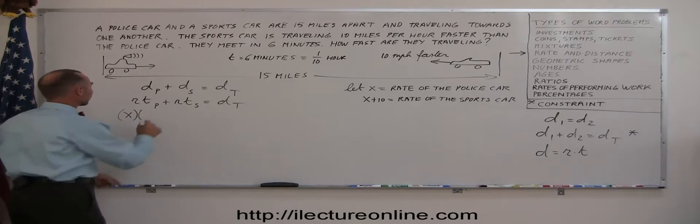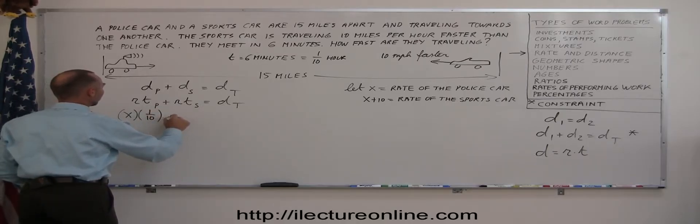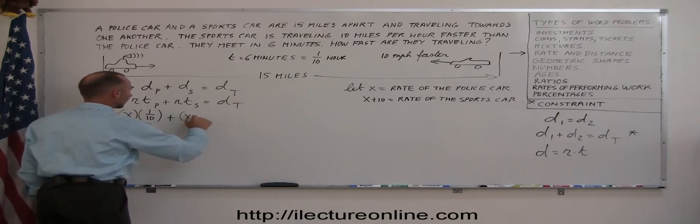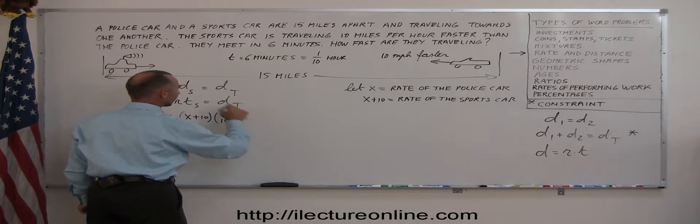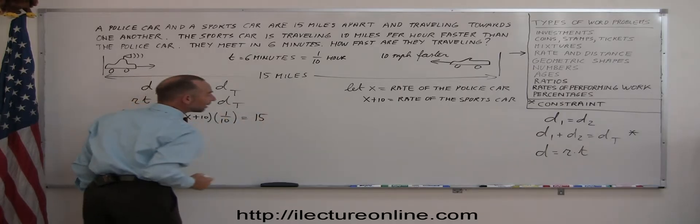So instead of six minutes, we're going to put in there one-tenth of an hour plus the rate of the sports car, which is x plus 10, times the time of the sports car, which is 1 over 10, equals the total distance travel, which is 15 miles.